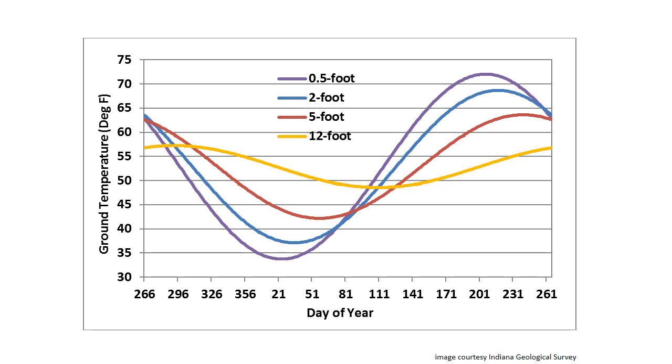So why are we doing this? Here's a plot of ground temperatures as a function of day of the year. The purple curve is essentially the temperature just below the surface, six inches below the surface. There's a lot of fluctuation throughout the season, from 32 degrees up to 72 degrees in this particular location.